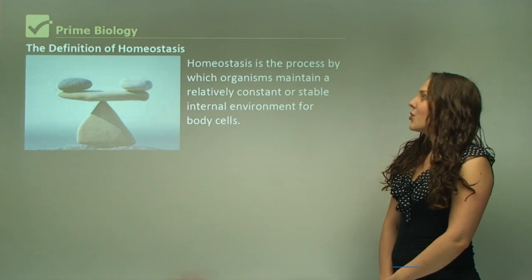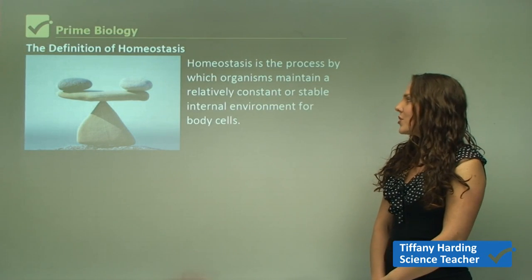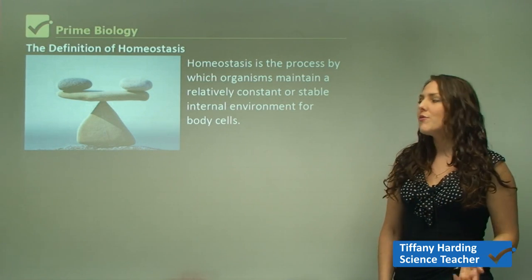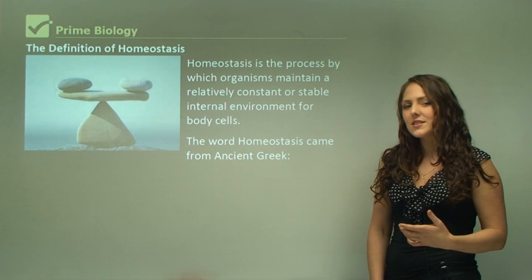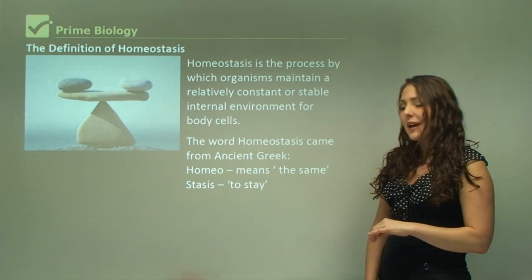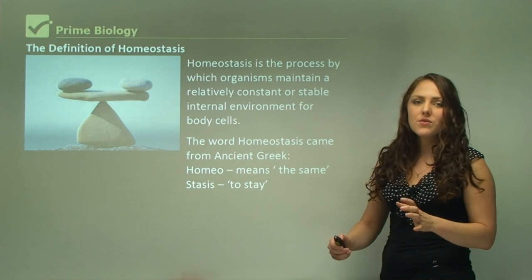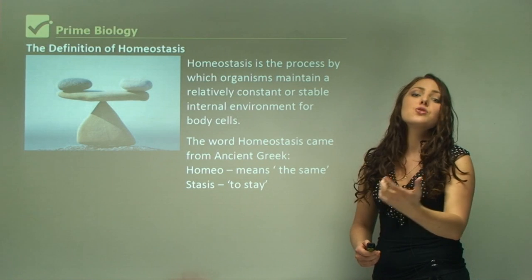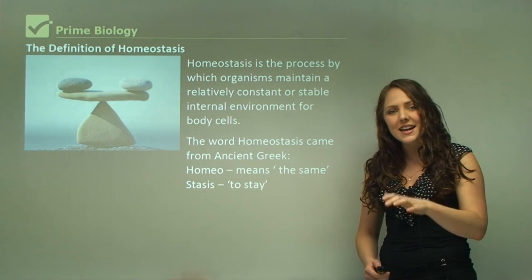Homeostasis is the process by which organisms maintain a relatively constant or stable internal environment for body cells. The word homeostasis comes from ancient Greek: 'homeo' means 'the same' and 'stasis' means 'to stay.' So it means to stay the same — our internal environment is trying to stay the same and maintain a balance.